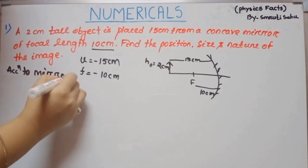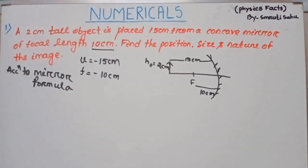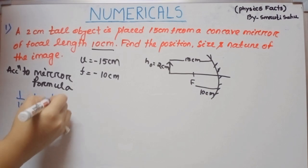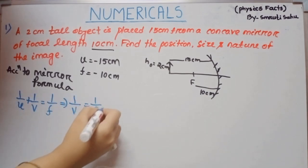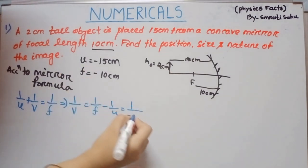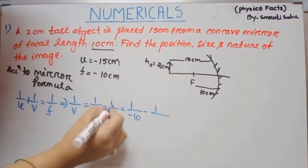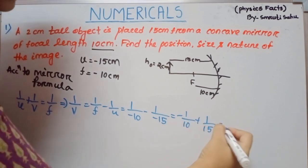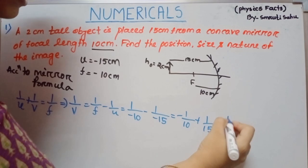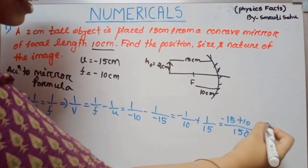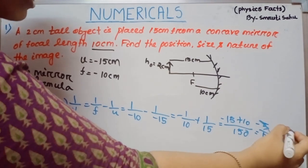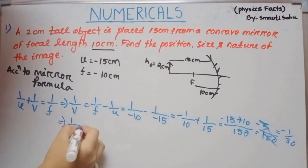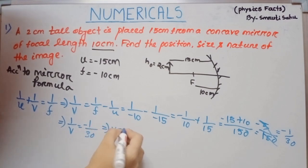We know the mirror formula: 1/U + 1/V = 1/F. So 1/V = 1/F − 1/U. Substituting: 1/F = −1/10 and 1/U = 1/(−15). So 1/V = −1/10 + 1/15 = (−15 + 10)/150 = −5/150 = −1/30. Therefore V = −30 cm.